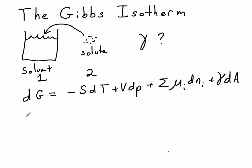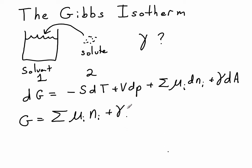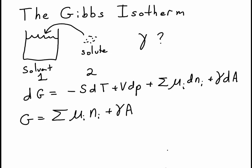Our second equation is one where we look not at the differential of the Gibbs function, but the Gibbs function itself. Since the chemical potential can be thought of as a Gibbs energy per mole for each substance, we can integrate that to get all the various substances. So if we take the Gibbs energy per mole for each component and multiply it by the number of moles, that gives the Gibbs energy due to each component. Summing over all components — component one and component two — gives the total Gibbs energy, plus the total surface energy (surface tension times area). Let's call these equation one and equation two.